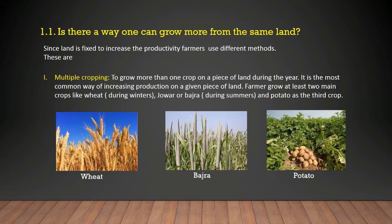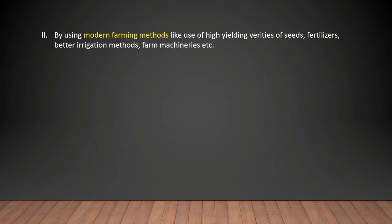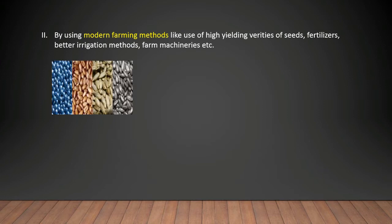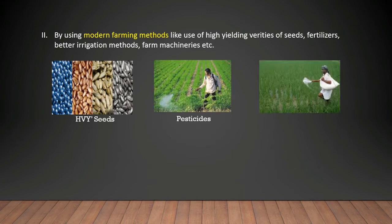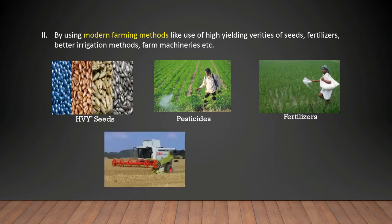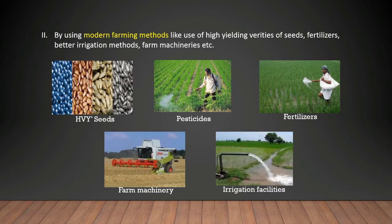The second method is using modern farming methods, such as high yielding variety of seeds, fertilizers, better irrigation methods, farm machinery, pesticides, and irrigation facilities. All these help in increasing the productivity from the same piece of land.